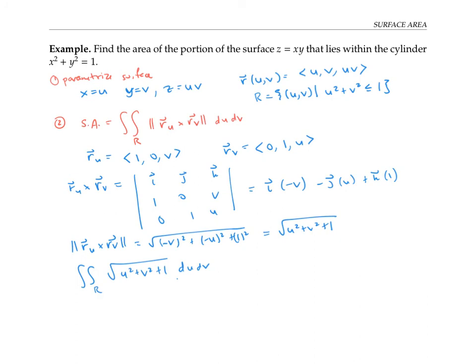The best way to integrate the square root of u squared plus v squared plus 1 over a circular disk is to use polar coordinates, since I see a square root of u squared plus v squared and the region is circular. Setting u equals r cosine theta and v equals r sine theta, the integral converts to: r from 0 to 1 (disk of radius 1), theta from 0 to 2π, integrand becomes the square root of r squared plus 1, and du dv converts to r dr d theta.